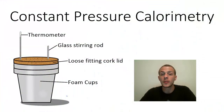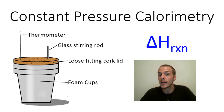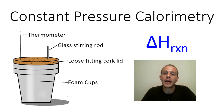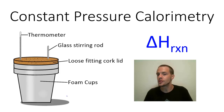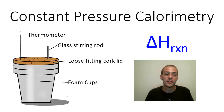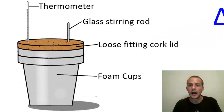In this video we're going to talk about constant pressure calorimetry. Constant pressure calorimetry is a way by which you can measure delta H for a chemical reaction. Delta H is the change in enthalpy, which is equivalent to the amount of heat that is either absorbed or released by the system under conditions of constant pressure. This is an apparatus that can be used to find delta H for a chemical reaction.